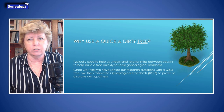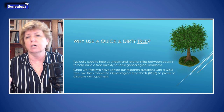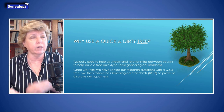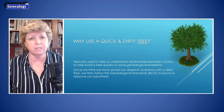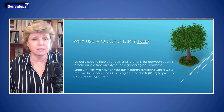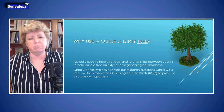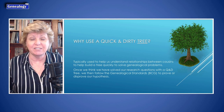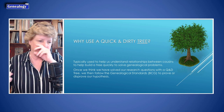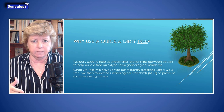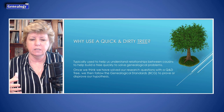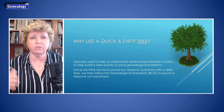Why use a quick and dirty tree? It's typically used to help us understand the relationships between cousins and build that out quickly. It's used for descendancy research, adoption research, and all kinds of stuff. Once we build out that quick and dirty tree privately so that nobody else copies from it, we go back and verify the line, so that if the tree is inaccurate, we'll catch it before it goes public.